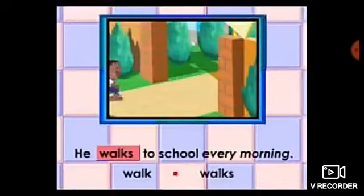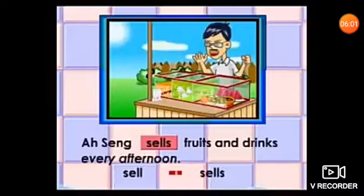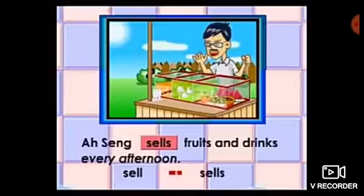He walks to school every morning — walk plus S, walks, because the pronoun is he. A saying sells fruit and drinks every afternoon — sells fruits every afternoon. A saying is a boy who sells fruits and drinks every afternoon. جو time آ رہا ہے وہ ہم sentence کی end میں رکھیں گے۔ Sell کے ساتھ ہم نے S لگا دیا because our 'saying' is a boy and it's a singular noun.